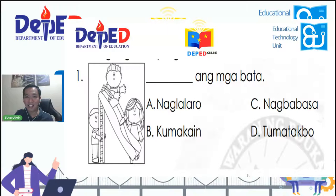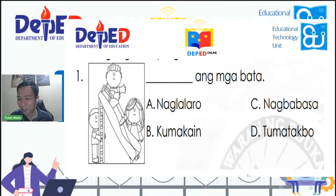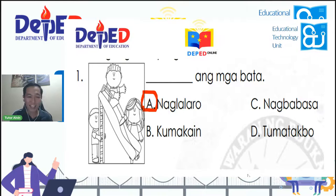Sabi ni Ruth: A po. Sabi ni Rona Grace: A po. Sabi ni Brianna: A po. Ang tamang sagot ay A — naglalaro. Tama kayo. Napagaling naman ninyo. Dumako tayo sa ikalawa. Ano ang nakikita ninyo sa larawan? Si nanay ay namimili sa ___. A — simbahan; B — paaralan; C — palengke; D — opisina. Saan namimili si nanay?